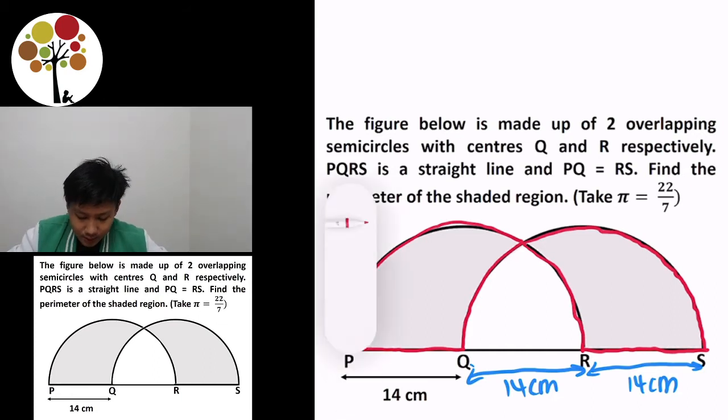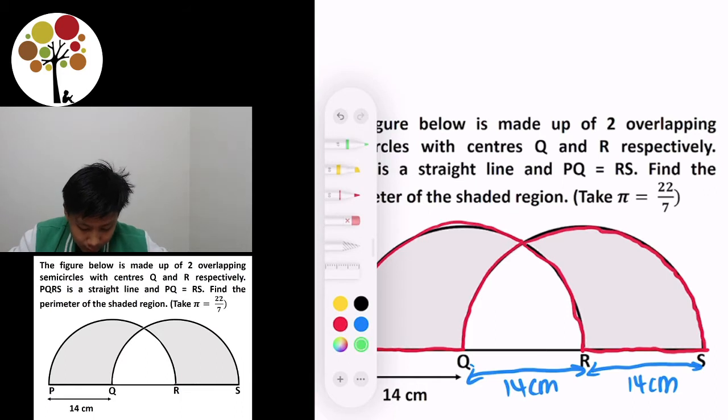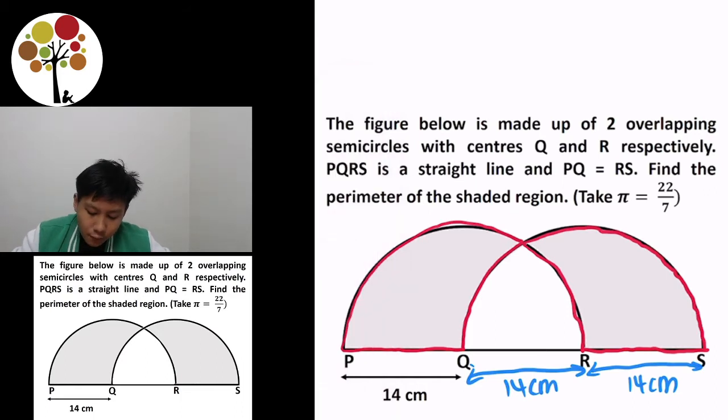So actually, if you take a closer look at it, and I'll just start doing it in green, it actually forms the whole perimeter of one circle including 14 cm plus 14 cm. I'll do it in green. So I'll just drag it over.